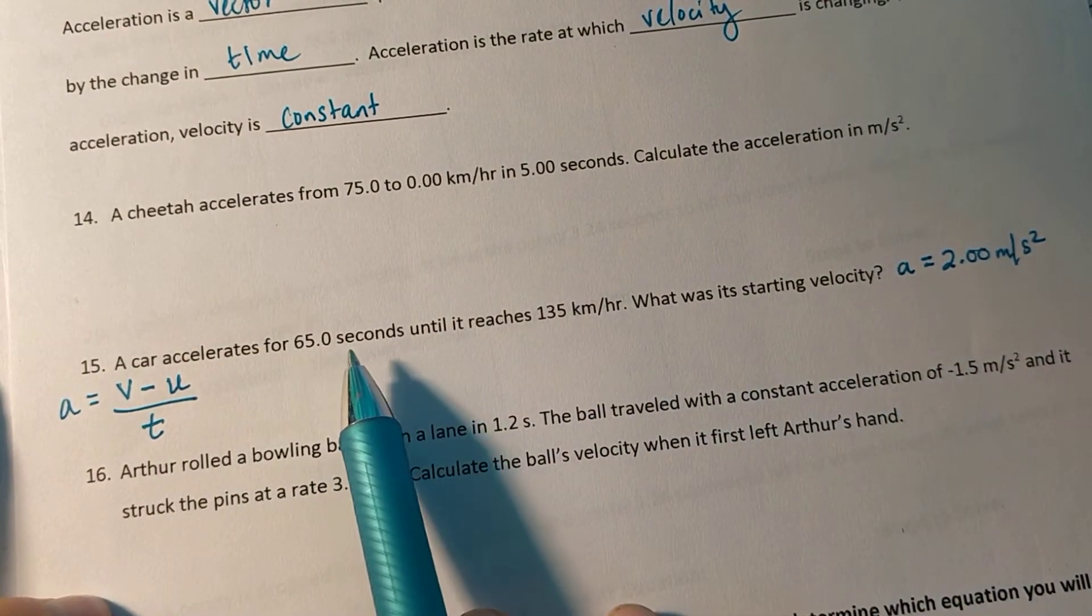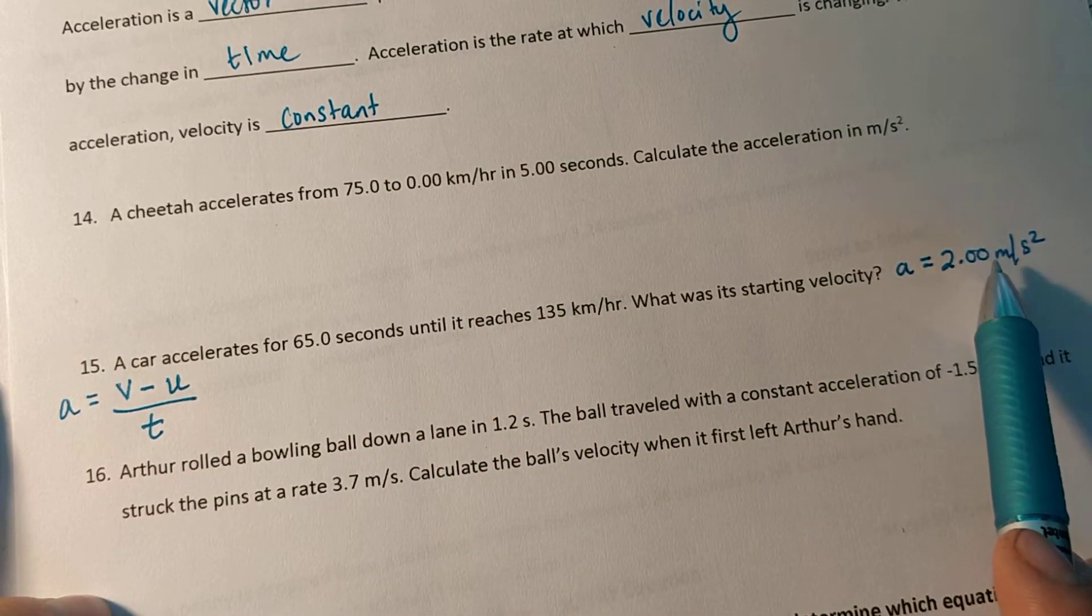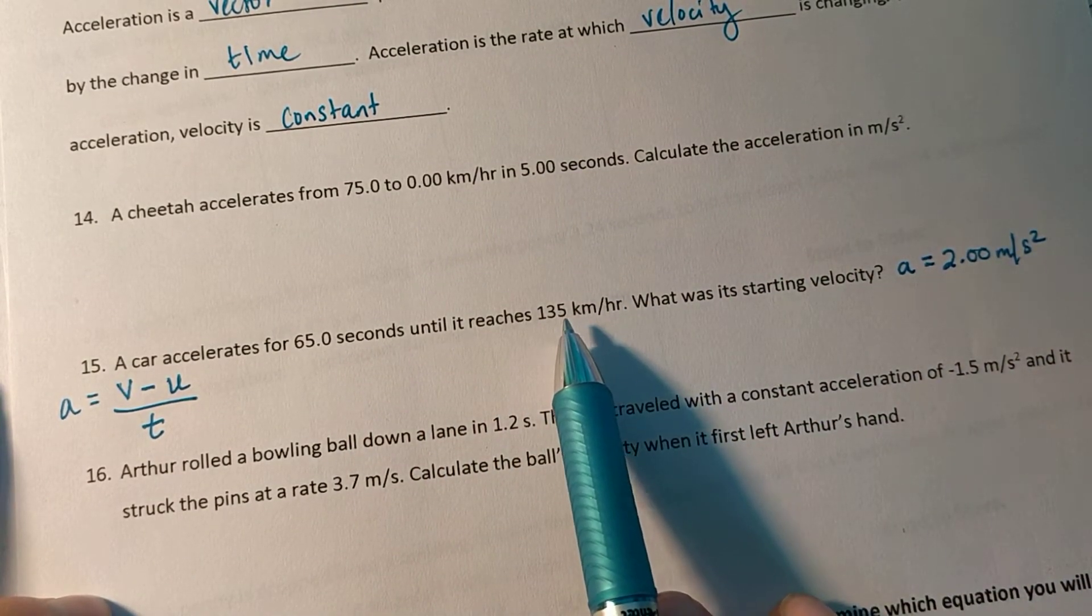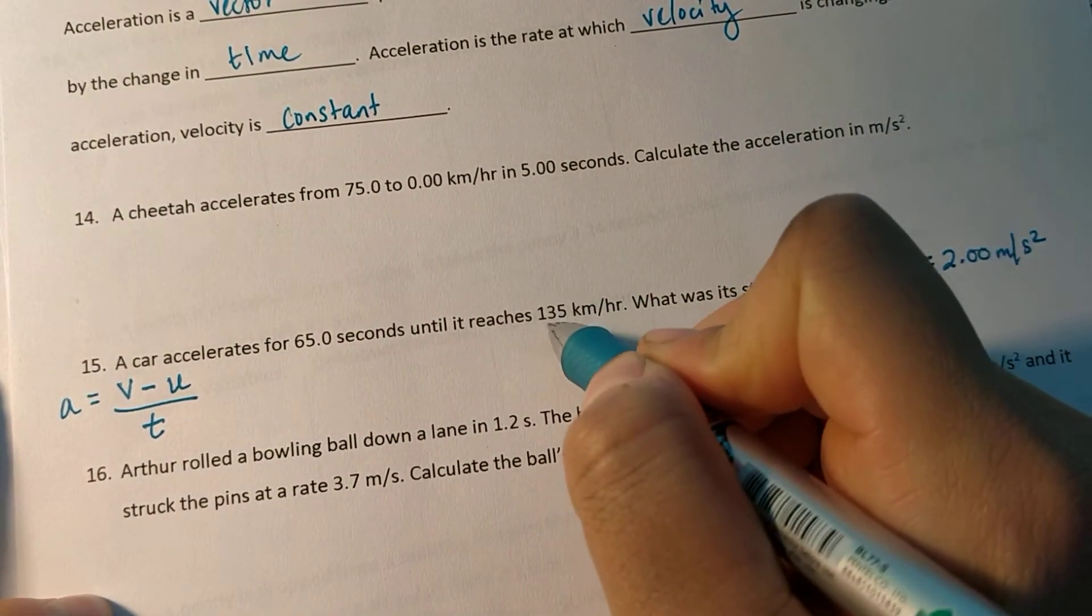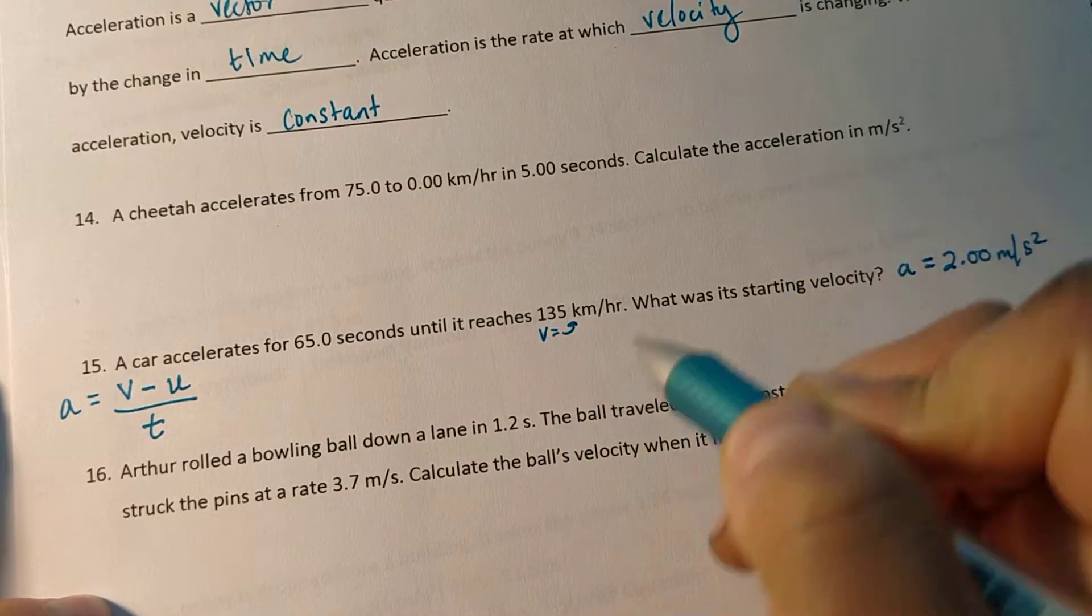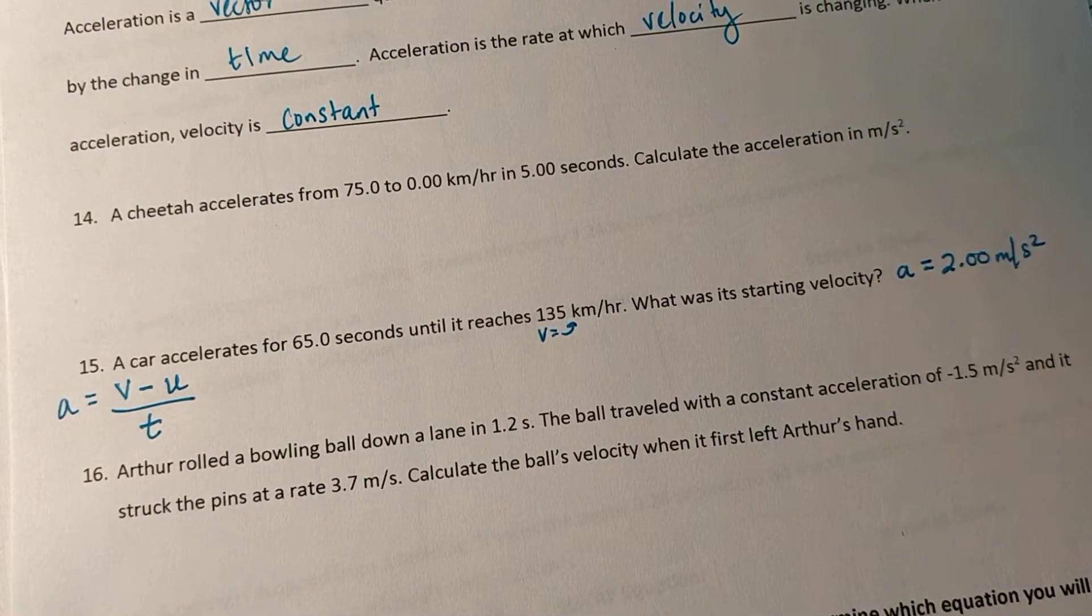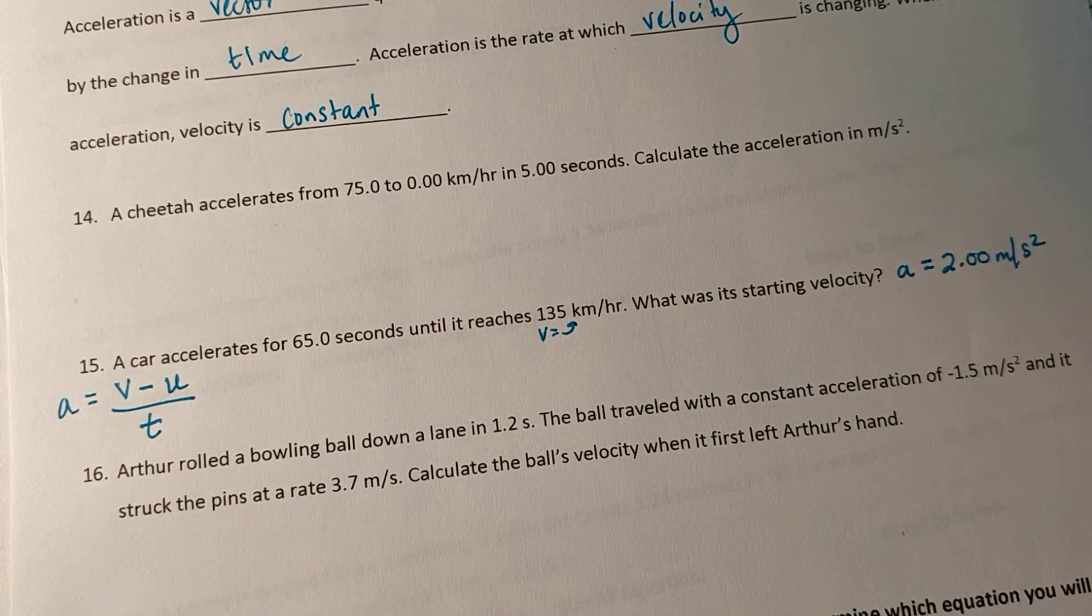Rather than convert this to hours, this to kilometers per hour squared, we're just going to start by converting the v, which is this 135 kilometers per hour.